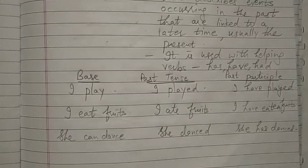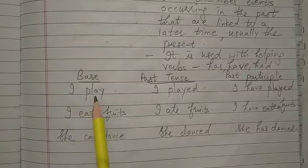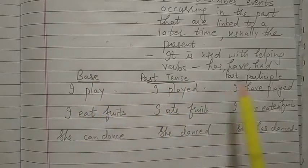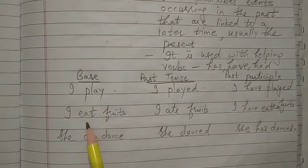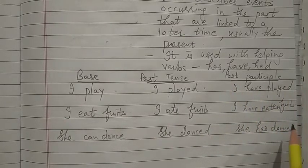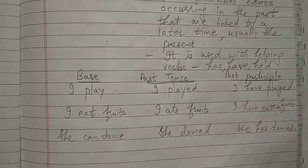Let's look at a few examples. 'I play' — play is the base form. 'I played' — past tense. 'I have played' — past participle. For 'eat': 'I eat fruits' is base form; 'I ate fruits yesterday' is past tense; 'I have eaten fruits early in the morning' is past participle. 'She can dance' — dance; she does; she has — does.